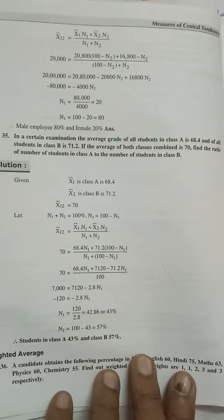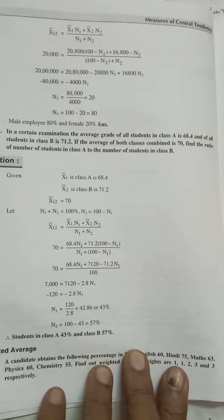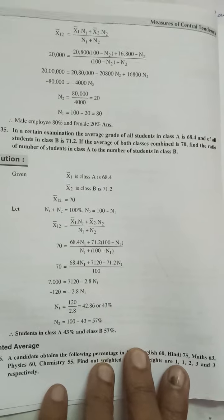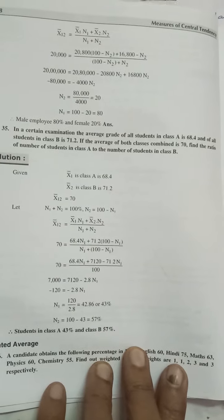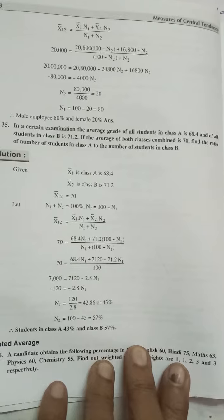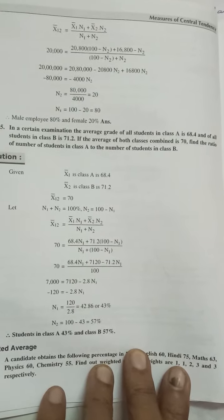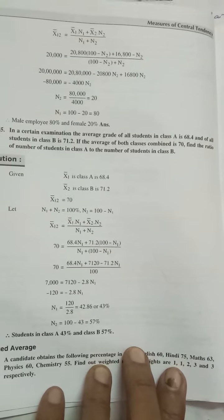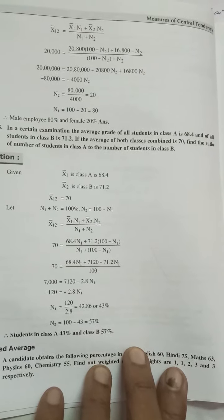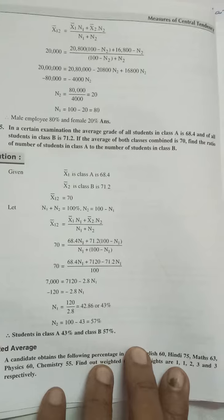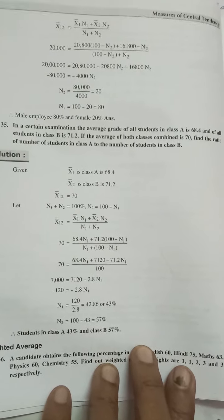My dear second year students in business statistics, prepare these questions. These are looking very important. This is on combined mean. You have to find out n1 plus n2. Here we need to assume n1 plus n2 is equal to 100, then you can do this easy to understand, my students.